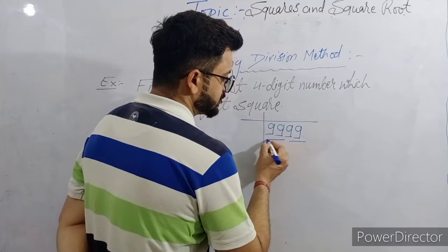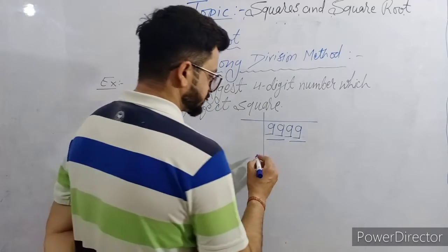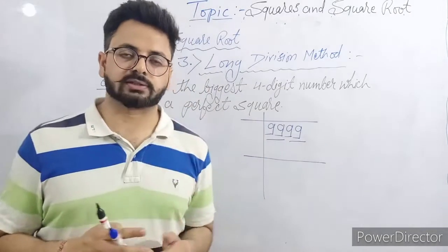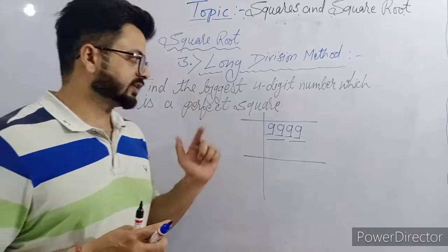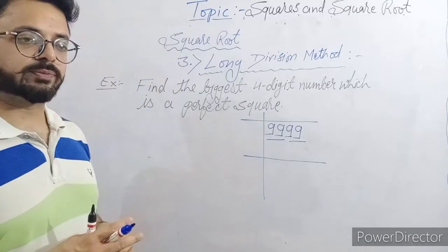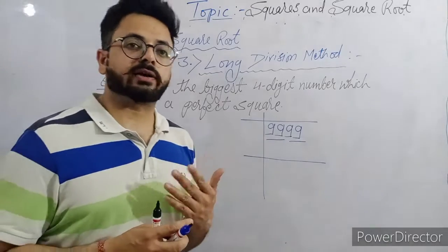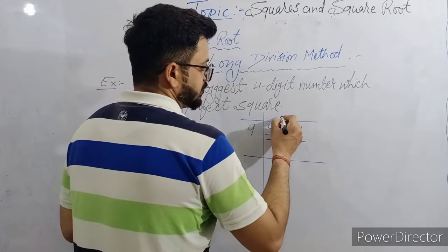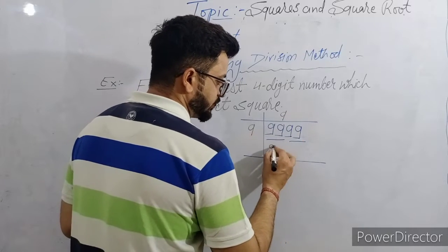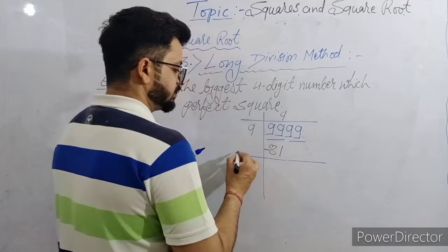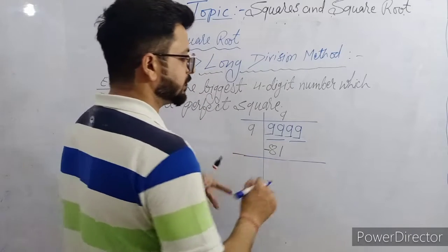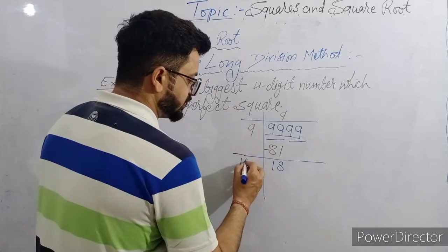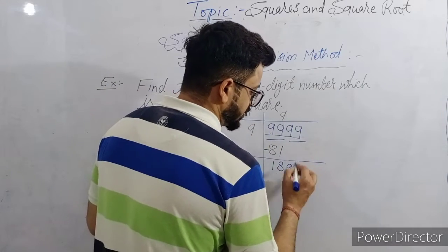We start to make two periods from 9,999. Which number's square can we subtract from the first period 99? Nine squared is 81 — we can subtract. Ten squared is 100 — we cannot subtract. So the highest number is 9. We write 9 here, and the square of 9 is 81. We subtract and get 18.